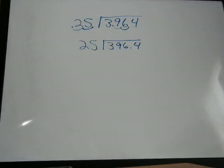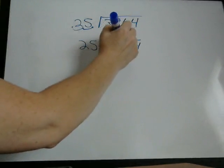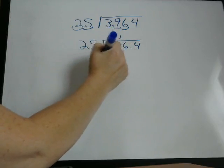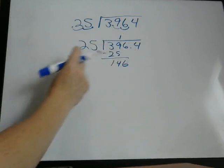So now we write this as 25 into 396.4, because we've moved the decimal twice in each number. And then we just do normal long division like we normally do. 25 into 39 goes once.